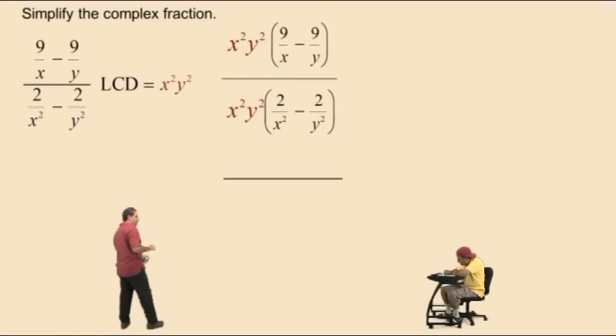So watch what happens. Here we go. First, we multiply our LCD by 9 over x. We're going to cancel one of the x's out and we're left with 9xy squared. Next, we'll multiply our LCD to 9 over y, cancelling one of the y's out which leaves us with 9x squared y.